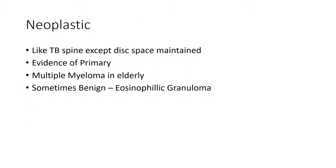Neoplastic spine disease is almost like TB spine, except that the disc space is maintained. You may have evidence of a primary tumor. Multiple myeloma in the elderly can be diagnosed by tenderness elsewhere, Bence Jones proteins in urine, and multiple lytic areas in flat bones. Benign conditions like eosinophilic granuloma can also produce radiological abnormalities in the spine.